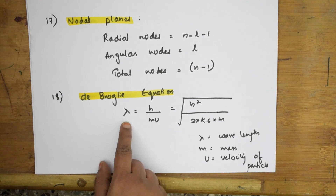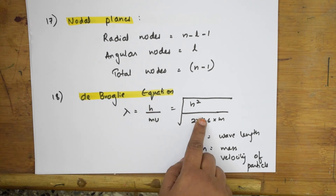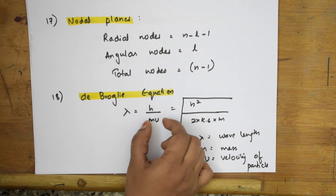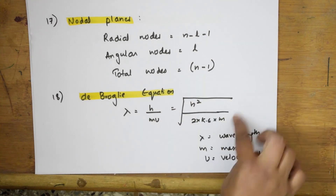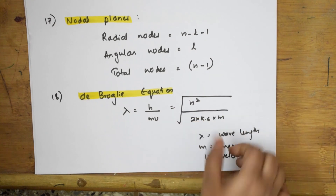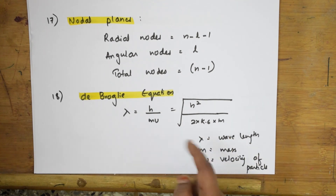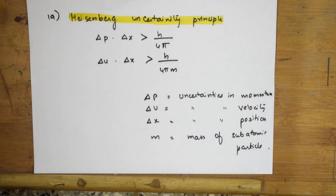The de Broglie equation is: λ = h / mv, which can also be written as λ = h / p. Here λ is the wavelength, m is the mass of the particle, and v is the velocity of the particle. Questions may ask for direct application of either form.